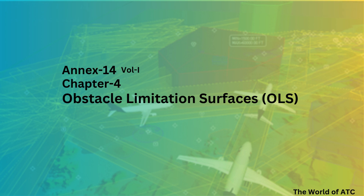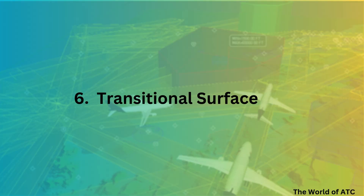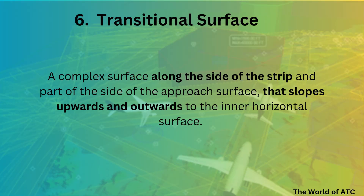From Chapter 4 of ICAO Annex 14 on obstacle limitation surfaces, we have already covered five surfaces, the last of which was the inner approach surface. Moving on to the next surface — the transitional surface — which is defined as a complex surface along the side of the strip and part of the side of the approach surface that slopes upward and outward to the inner horizontal surface. This is the ICAO definition; let's understand it with the help of a diagram.